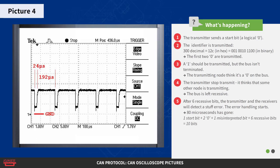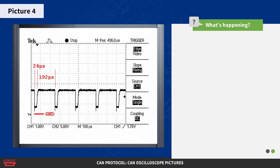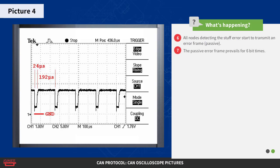At this point, 80 microseconds has gone: one start bit, two zeros, one misinterpreted bit, and six recessive bits — a total of 10 bits, which equals 80 microseconds. All nodes detecting the stuff error will now start to transmit an error frame. In this case, the error frame is passive because a number of errors was generated before the picture was captured, so the transmitter is error passive. A passive error frame is just like an active error frame, but it's transmitted with a recessive level and so isn't visible on the bus.